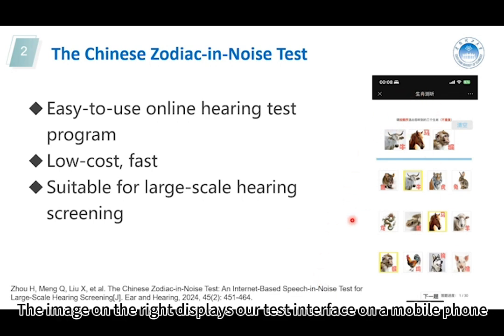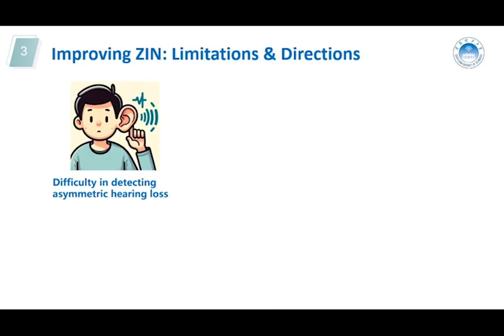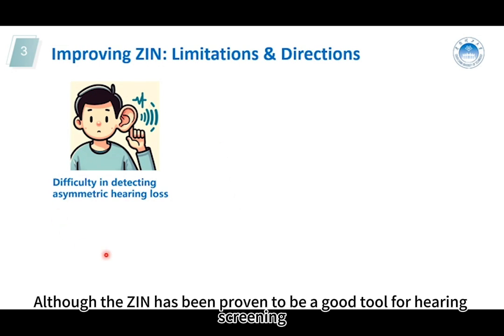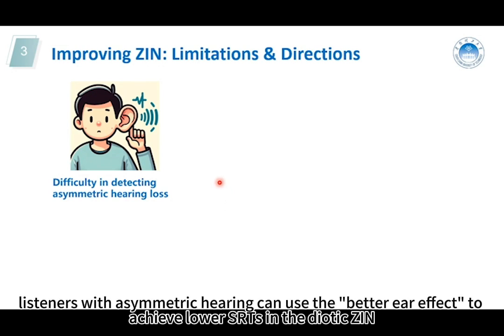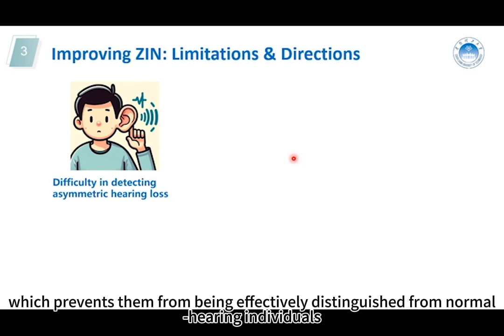The image on the right displays our test interface on the mobile phone. Although the scene test has been proven to be a good tool for hearing screening, it does have a shortcoming, particularly in detecting asymmetric hearing loss. Since the scene is currently in its diverted version, listeners with asymmetric hearing can use the better ear effect to achieve lower SRTs in the diverted scene, which prevents them from being effectively distinguished from normal hearing individuals.